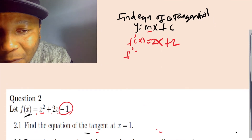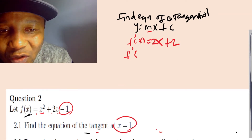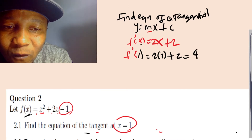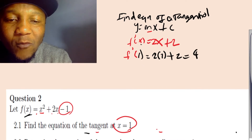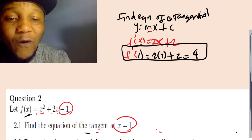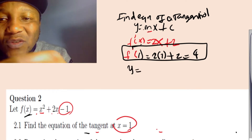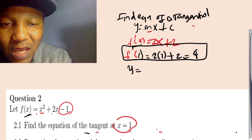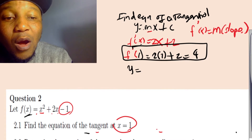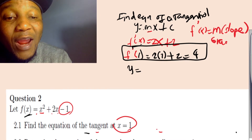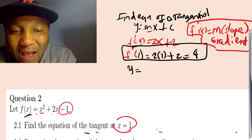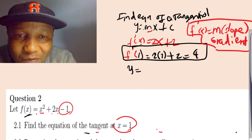Now we know x = 1 at the point of tangency. So we substitute x = 1: f'(1) = 2(1) + 2 = 4. So the slope m = 4. Remember, f' means slope — you can also call it gradient. So we have our slope which is 4.